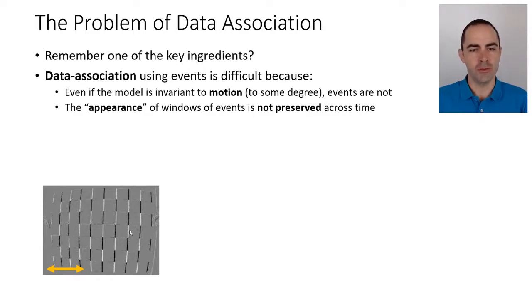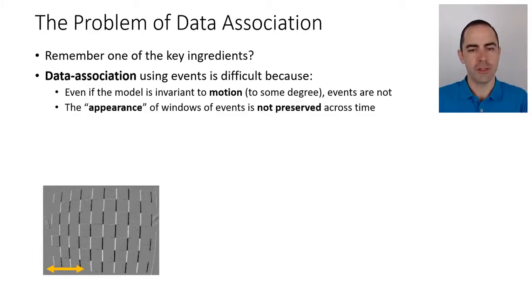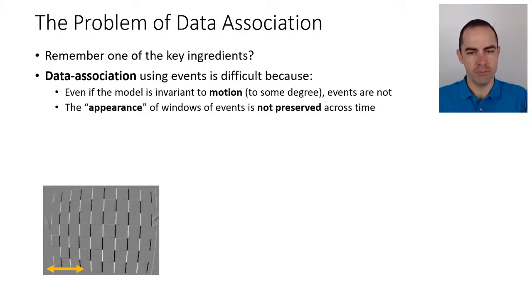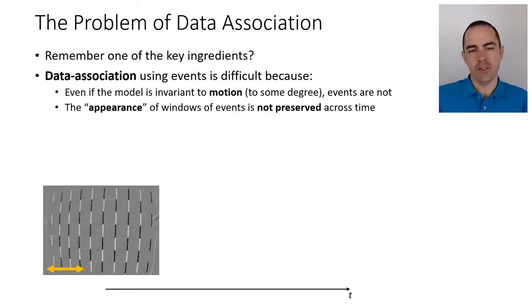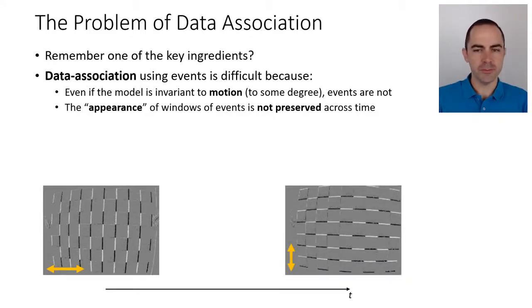If we plot events in a space-time window and collect them into artificial event frames, we see the appearance of the window of events. If we move the camera left and right while viewing a checkerboard, events are mostly triggered by the vertical edges. But if instead we move the camera up and down, we then only see the horizontal edges.